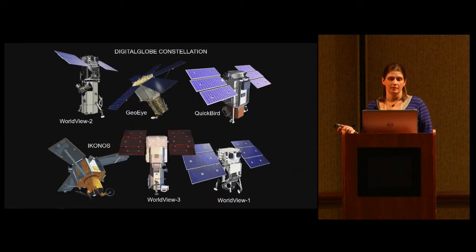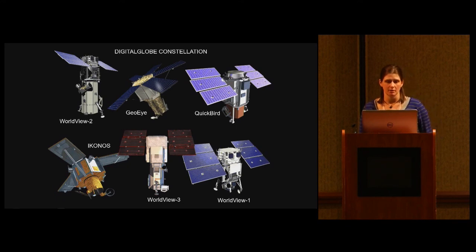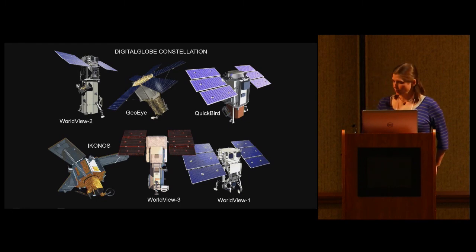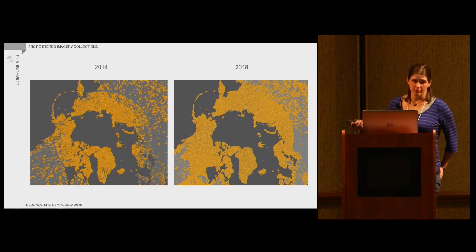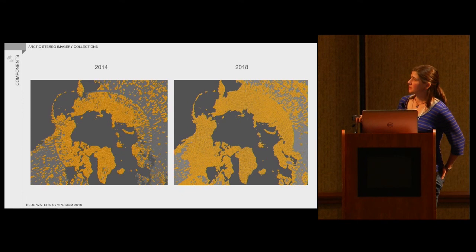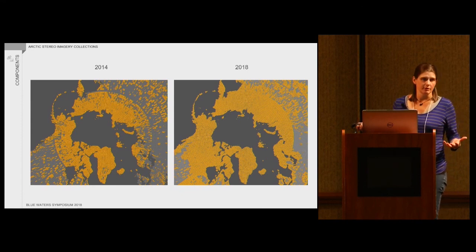In our case, we in the polar NSF community are lucky enough to have access to the Digital Globe constellation of satellites. These are downward-pointing telescopes that take images up to 30 centimeters per pixel on the panchromatic. We're using the WorldView satellites for this particular project. When we first proposed the project in 2014, we didn't even have full coverage of the Arctic. This represents the stereoscopic image collections in the Arctic with cloud cover 20% or better — so presumably mostly cloud-free.